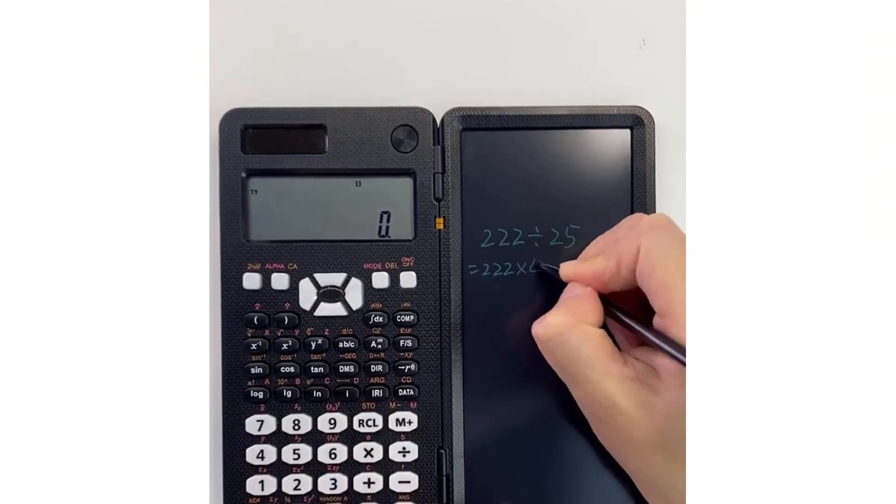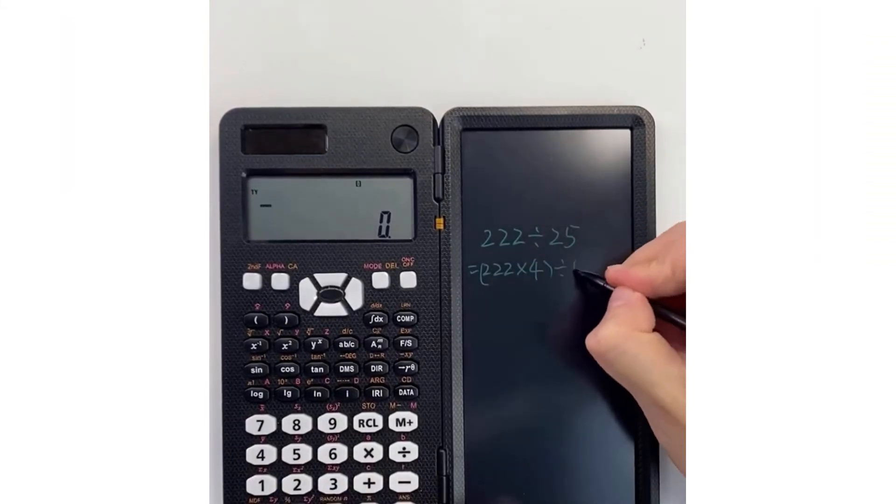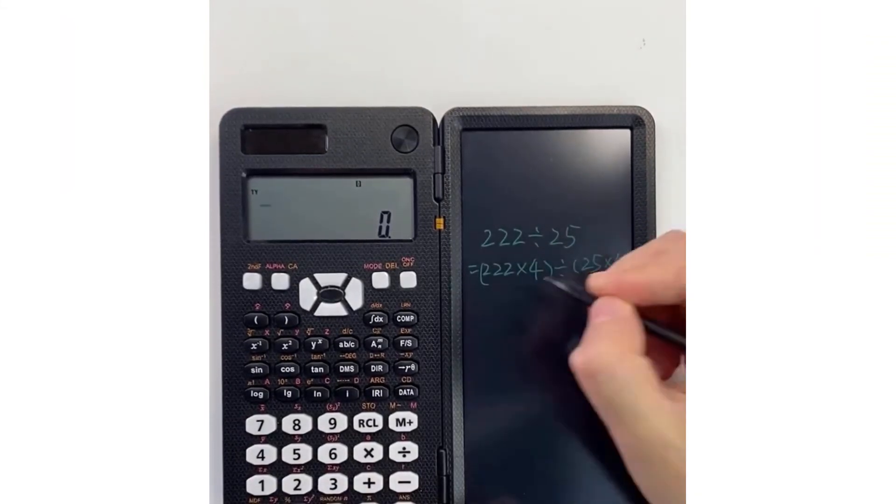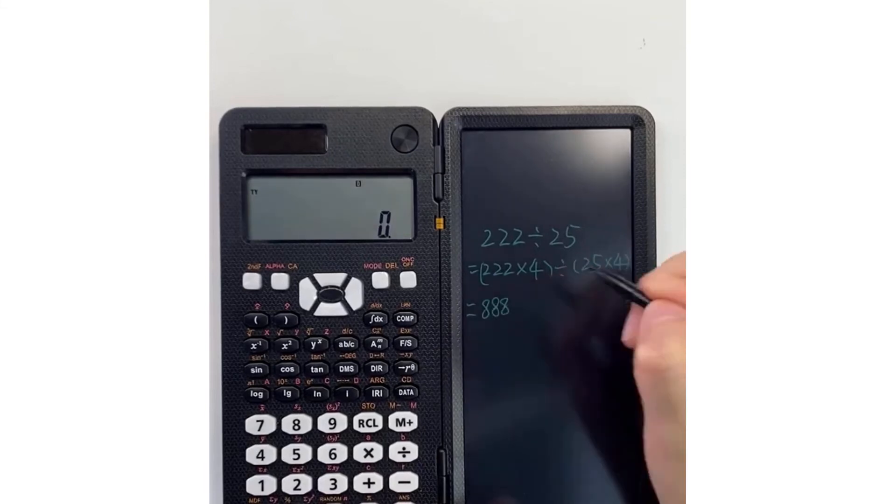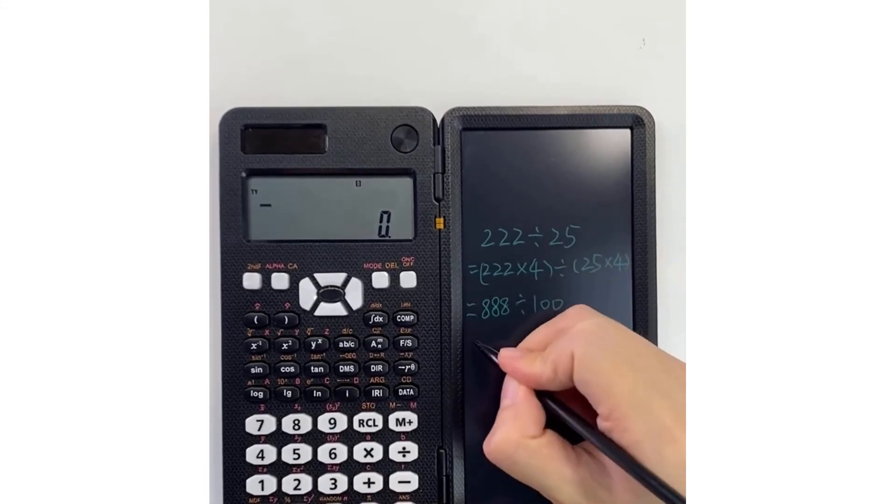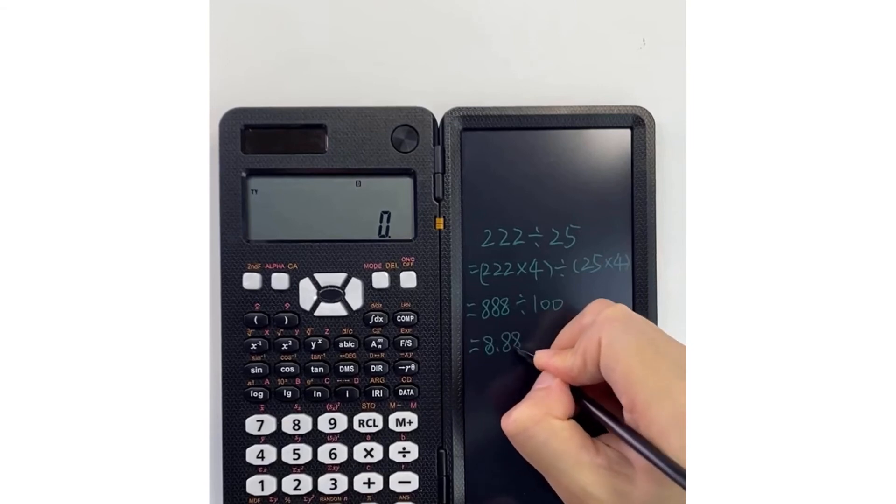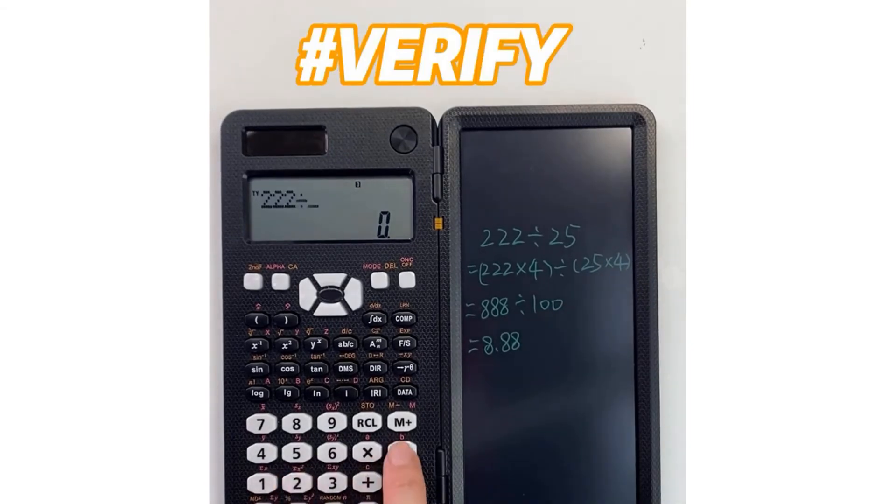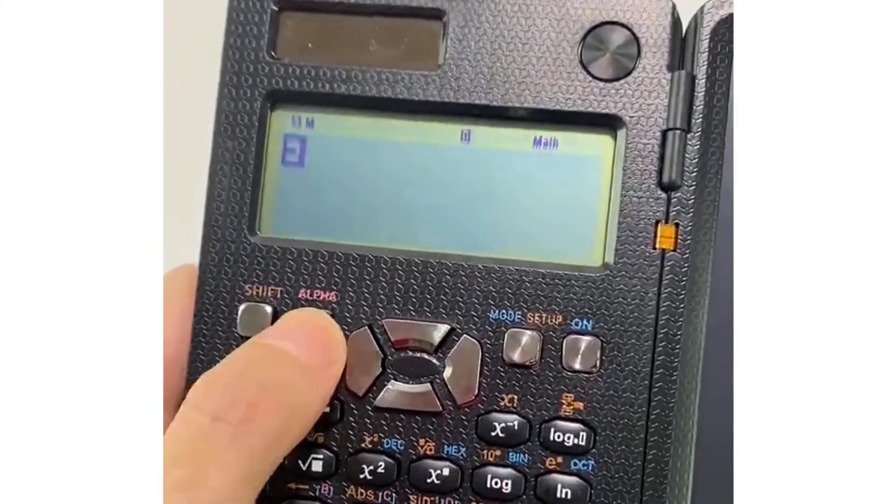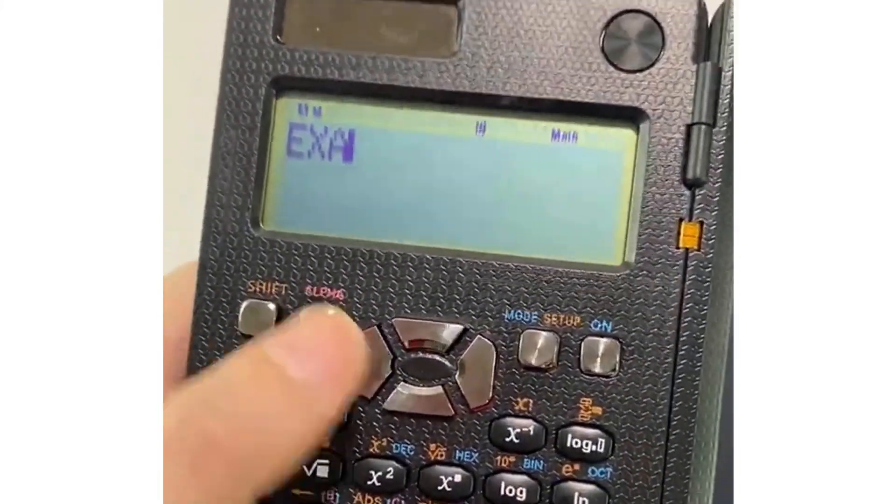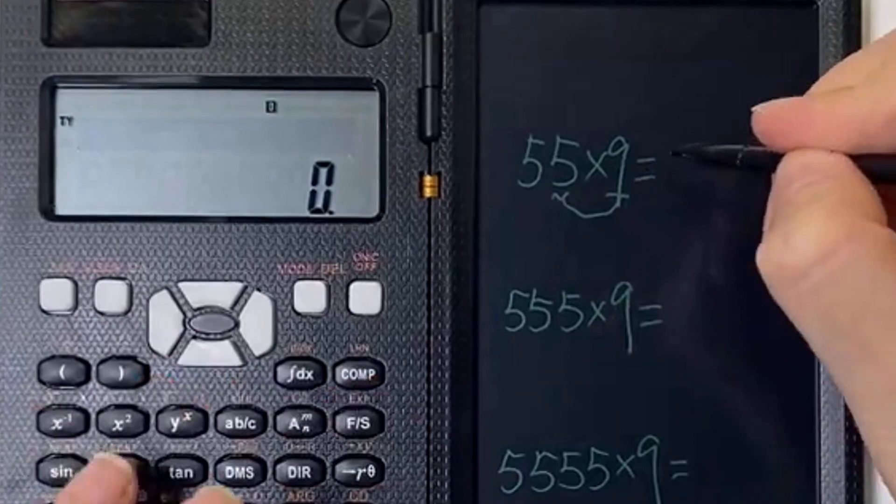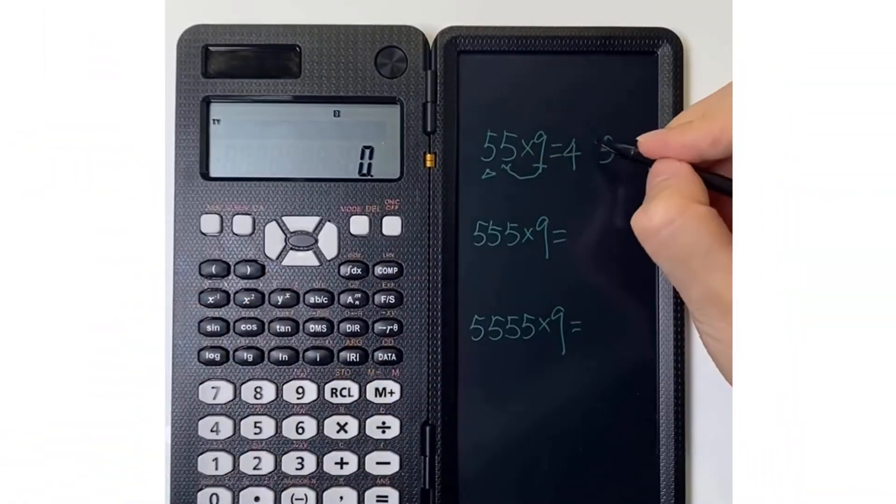And one important thing I really like about this writing board is that even if your pen gets lost, you can still use the normal pen we used to write in our books to write on the board and it will still work. This calculator is foldable and portable, so I highly recommend it to you if you are a junior or high school student, college student, or professional researcher. You can find the link to this calculator in the description down below.